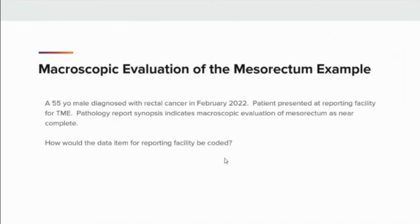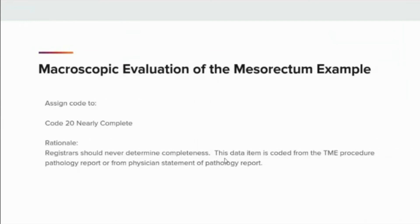Let's look at a couple of examples. A 55-year-old male diagnosed with rectal cancer in February 2022 presented at the reporting facility for TME. The pathology report synopsis indicates macroscopic evaluation of the mesorectum is near complete. How would the data item for the reporting facility be coded? The answer is code 20, nearly complete. Registrars should never determine completeness — this data item is coded from the TME procedure pathology report or from a physician statement referencing a pathology report.